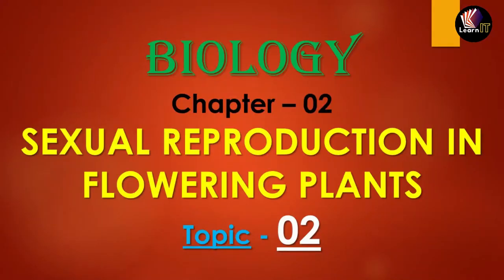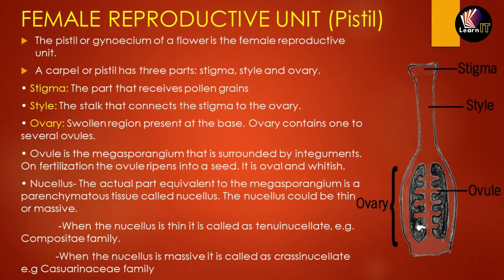Hello and welcome to a brand new video of the channel Learn It. Today we'll be taking topic 2 of sexual reproduction in flowering plants. Before moving forward, if you have not seen the first topic in which we learned about the male reproductive part — the anther, which is a subunit of stamen — please go and watch from the playlist of 11th class for clear understanding.